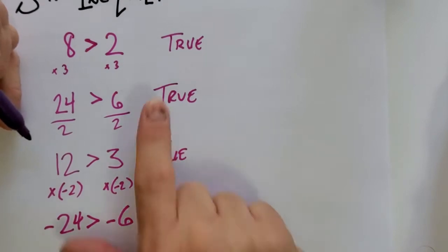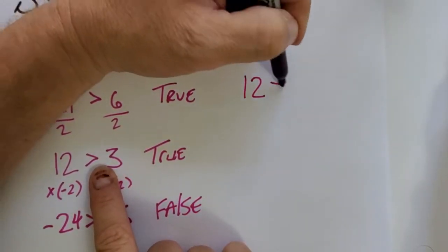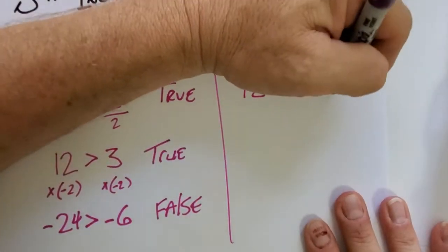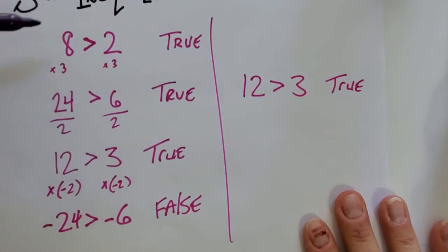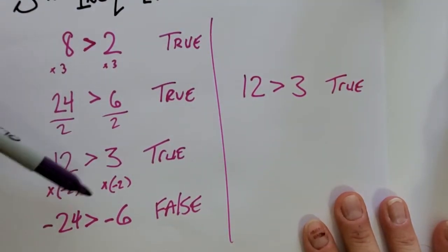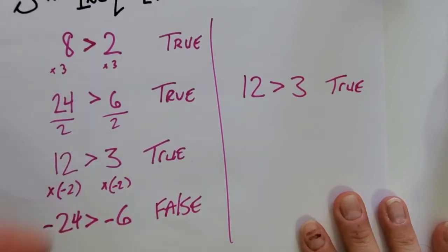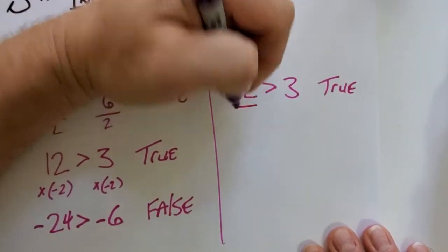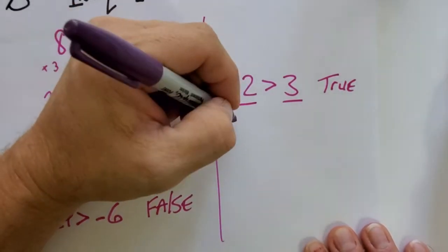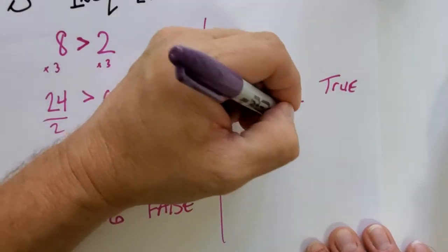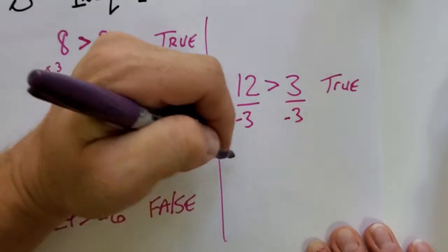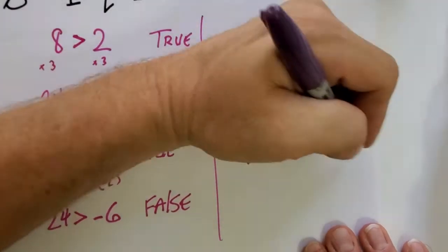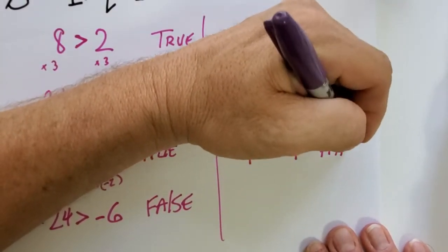Now let me write another inequality. I'm going to start with 12 is greater than 3. That's true. We tried multiplication by positive is fine, but once we multiply by negative, it's not fine. Let's check division by a negative. 12 divided by negative 3. We end up with -4 > -1. And that's false.